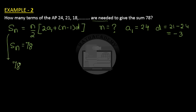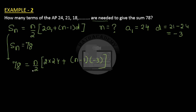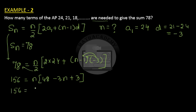Substituting the known values: 78 = n/2 × (2×24 + (n−1)×(−3)). Cross-multiplying by 2 gives 156 = n × (48 − 3n + 3), and distributing −3 we get 156 = n × (51 − 3n), which expands to 156 = 51n − 3n².